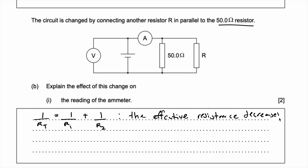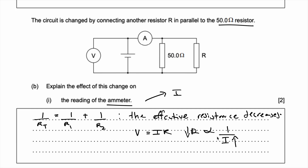From V = IR, resistance is inversely proportional to current, and the ammeter measures current. So if the resistance goes down, the current must go up because they're inversely proportional. Therefore, the reading of the ammeter increases because current goes up.